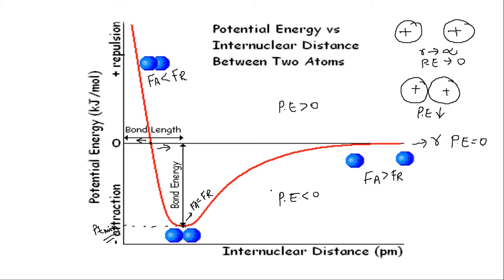Talking about energy: when the distance is large, potential energy is zero. As atoms approach each other, energy decreases, meaning energy is released as we go from that configuration towards the equilibrium configuration. And as we move from the equilibrium configuration further inward (to the left), energy is required once again.